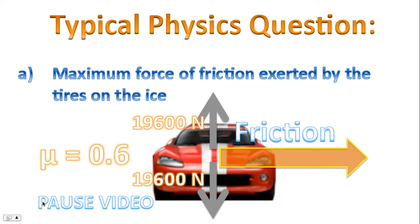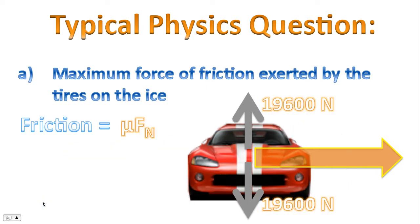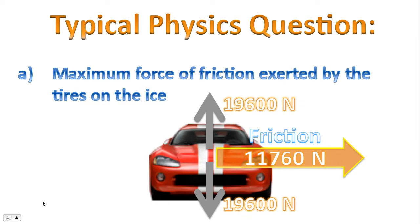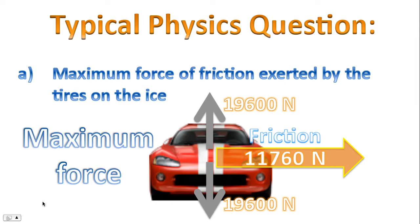Please pause the video and try to solve for the force of friction. Friction is given by the formula: coefficient multiplied by the normal force — 0.6 times the normal force — and we end up with a value for the force of friction. This is the maximum force of friction that the tires can exert on the ice.